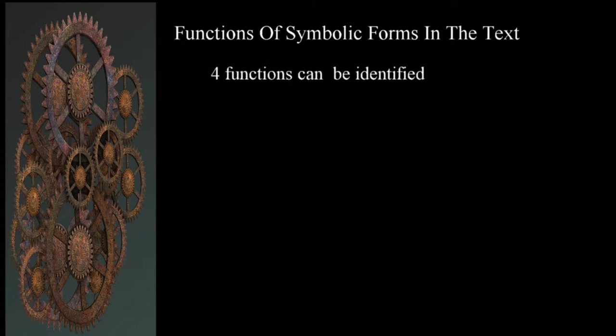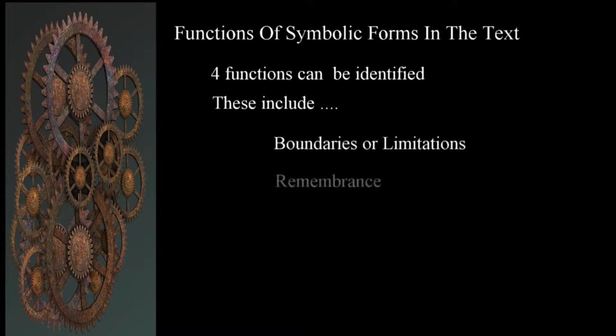Four functions can be identified as representative elements appear in the scriptures. These include boundaries or limitations, remembrance, identity, and inheritance. These also provide a means of bridging the gap between the printed word and doctrine. We can better understand abstractions created by symbols as we see fulfillment in events that take place and in the revelation of God's purpose. Difficult passages are made less confusing when we understand how to interpret these things within the context established in the writings. We can also understand the difference between subjective and objective interpretations as we try to understand these elements.